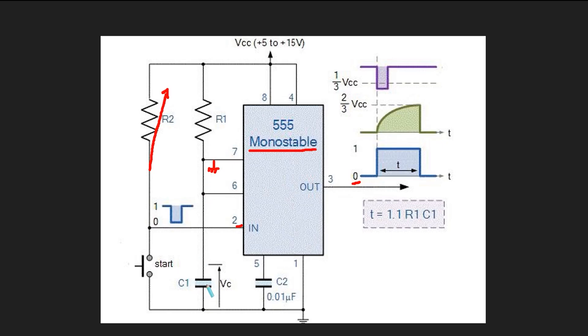However, when we press this switch, the comparators invert the flip-flop output, making the IC output go high. This breaks the connection between pin 7 and ground, allowing the capacitor to start charging. The charging continues until the comparators change the flip-flop output again.